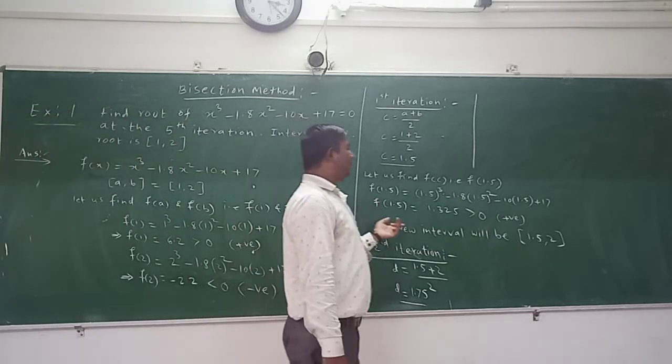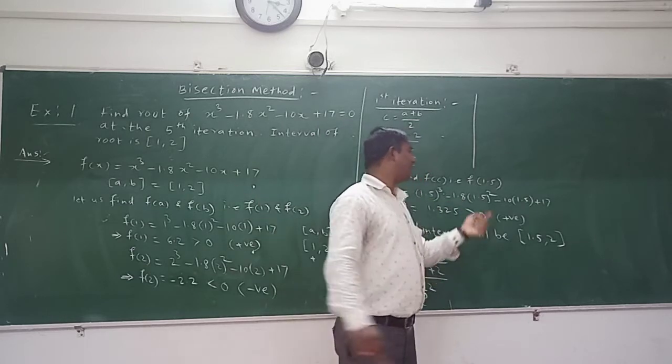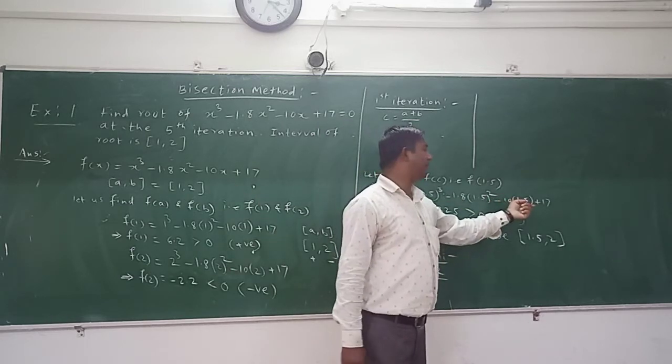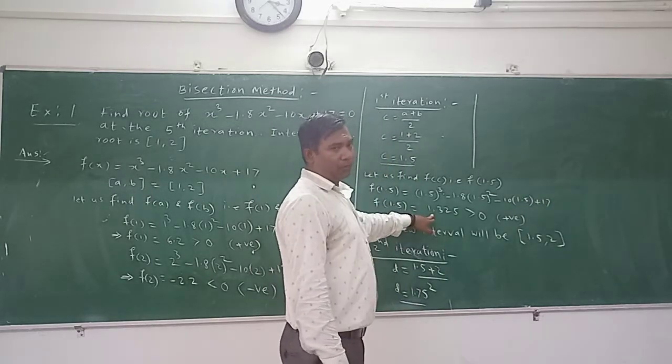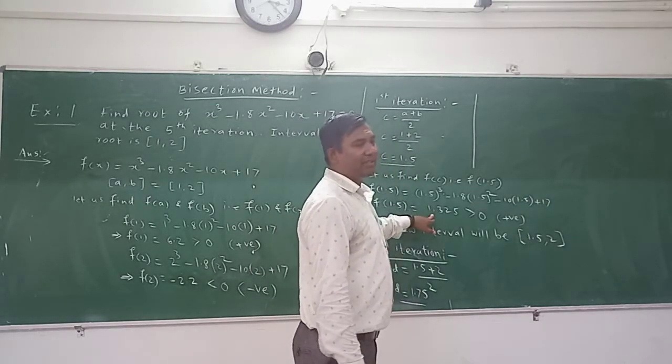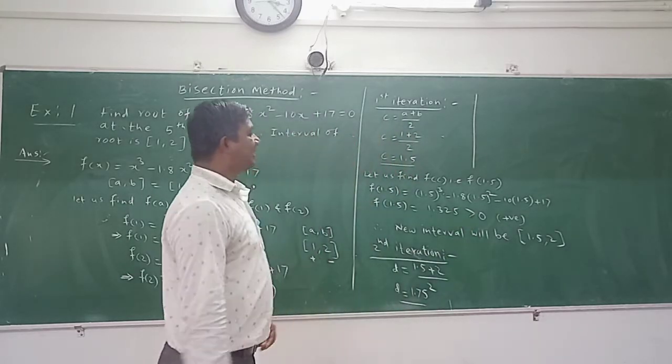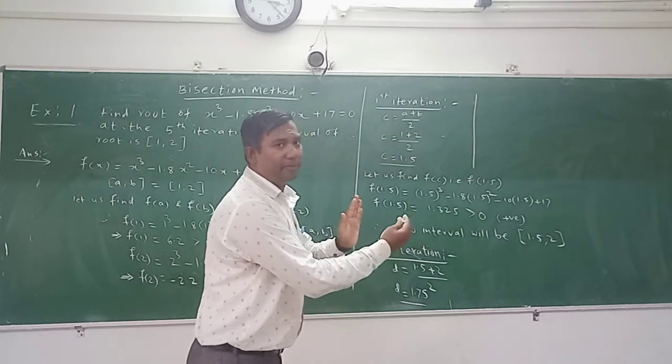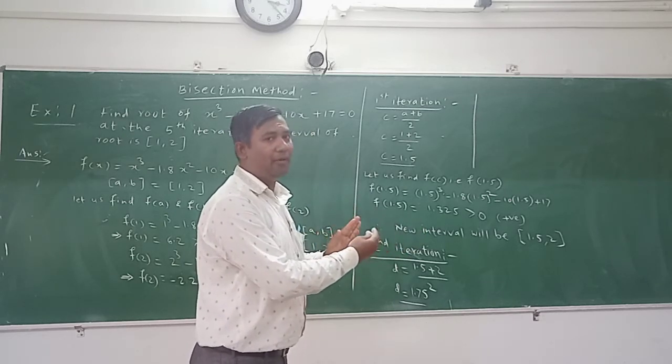So f of 1.5 will be 1.5 cube minus 1.8 into 1.5 square minus 10 into 1.5 plus 17. So you will get some value. It is here 1.325 which is greater than 0. Now why I have to mention this? Because you have to shorten the interval and we have to come closer for the value of root.